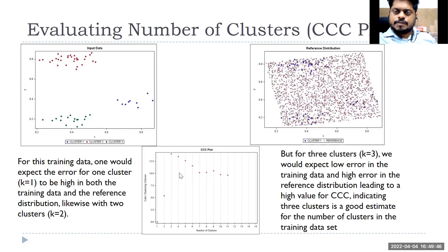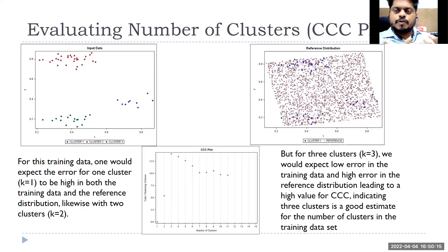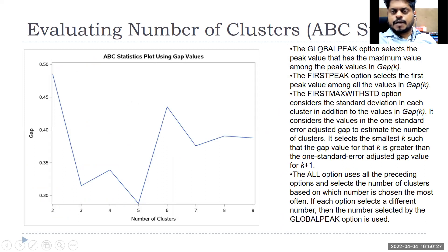When the distance between your algorithm's cluster set and the randomly-generated cluster set is maximum, that means your algorithm has created a better set of clusters. If the distance is small, your algorithm performs no better than random cluster selection. In the ABC method, whenever there is a peak, you can choose that number of clusters — options include first peak, global peak, or first maximum with standard deviation.